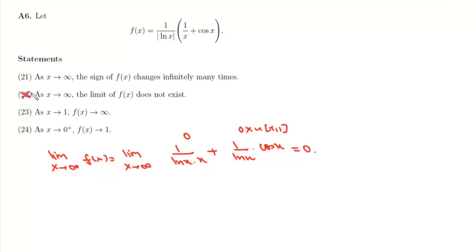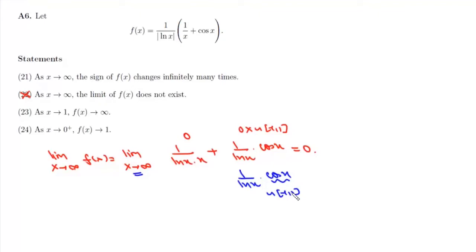Now for Statement 21: as x approaches infinity, we have the term 1/(log x) · cos x. Since cos x oscillates between -1 and +1, the value of f(x) is going to oscillate when x tends to infinity. Therefore Statement 21 is correct.